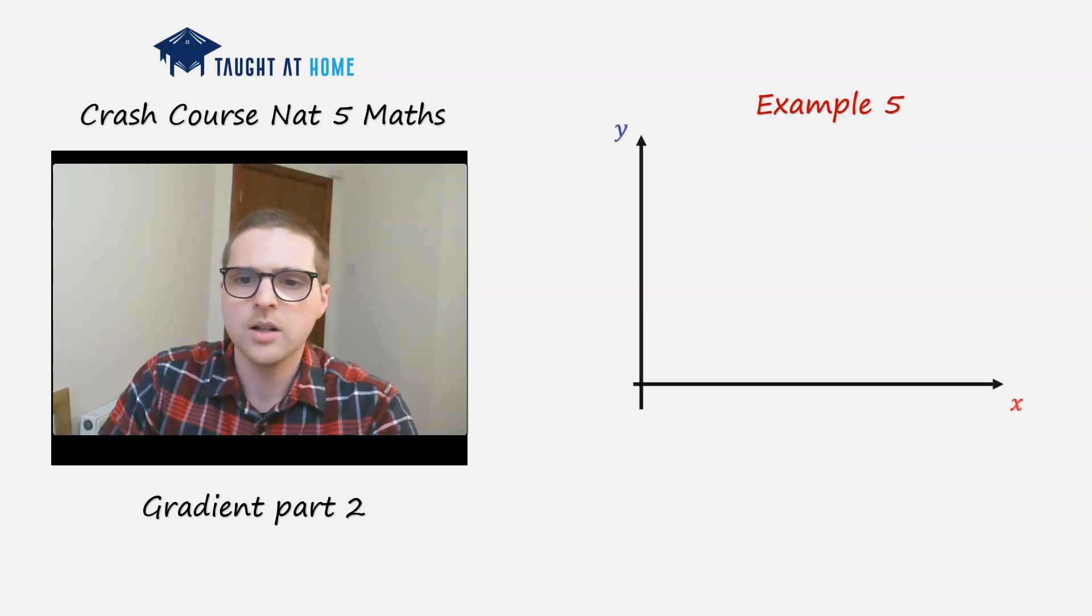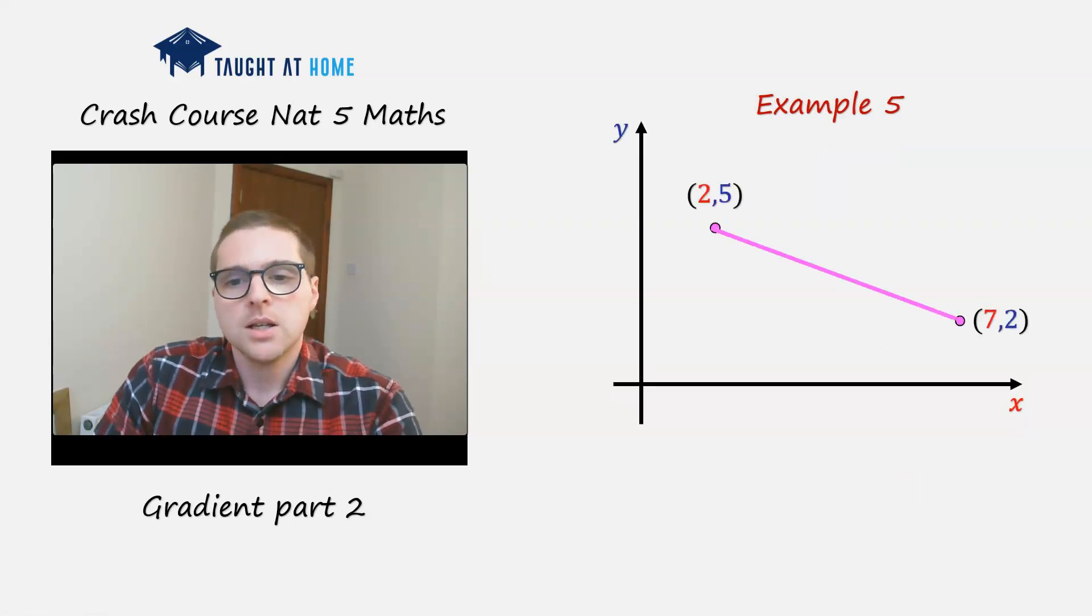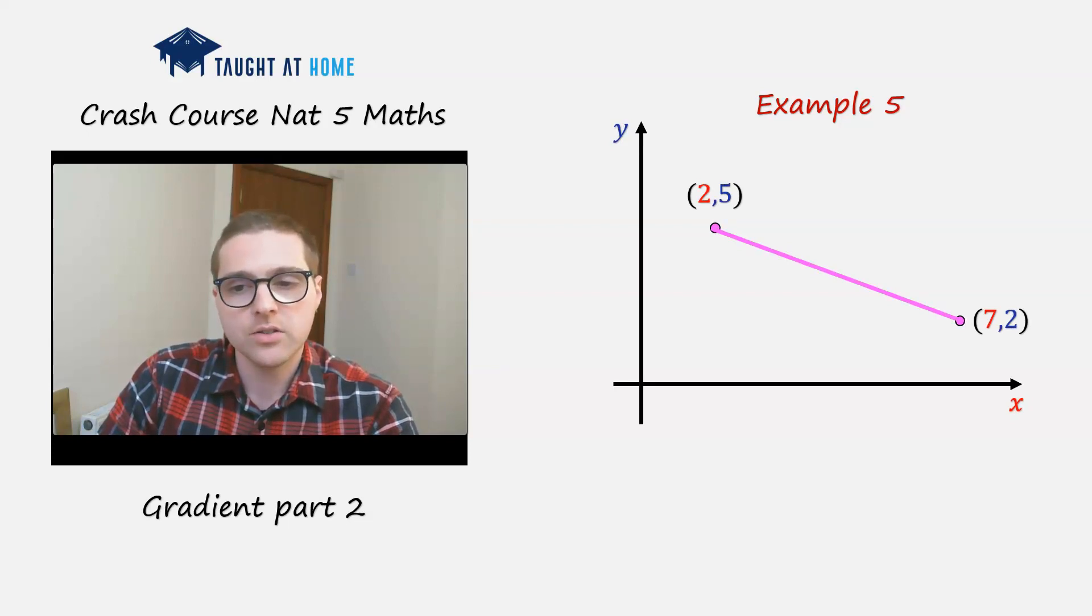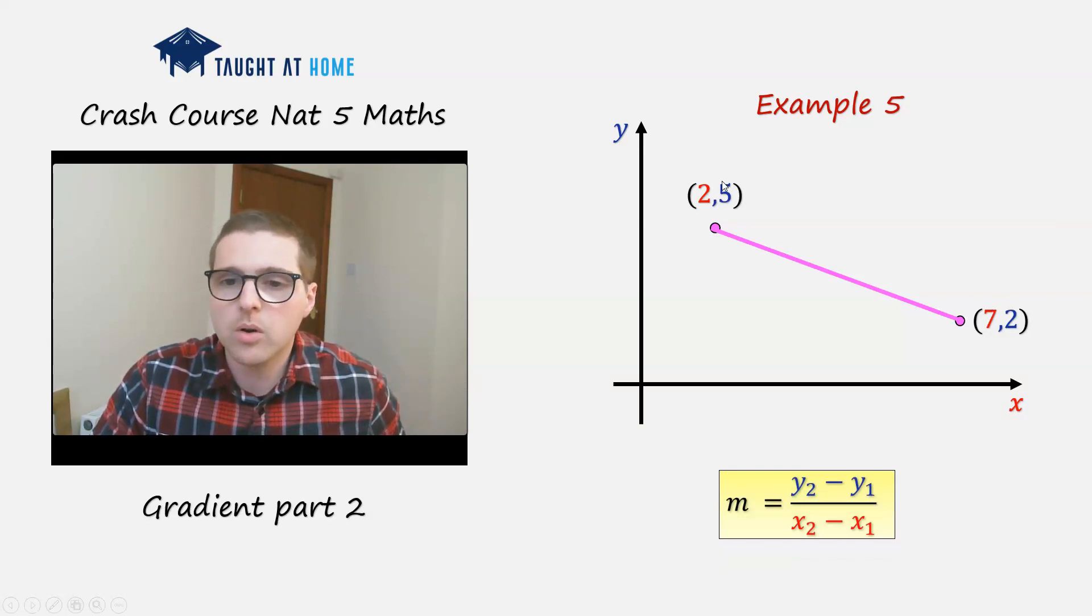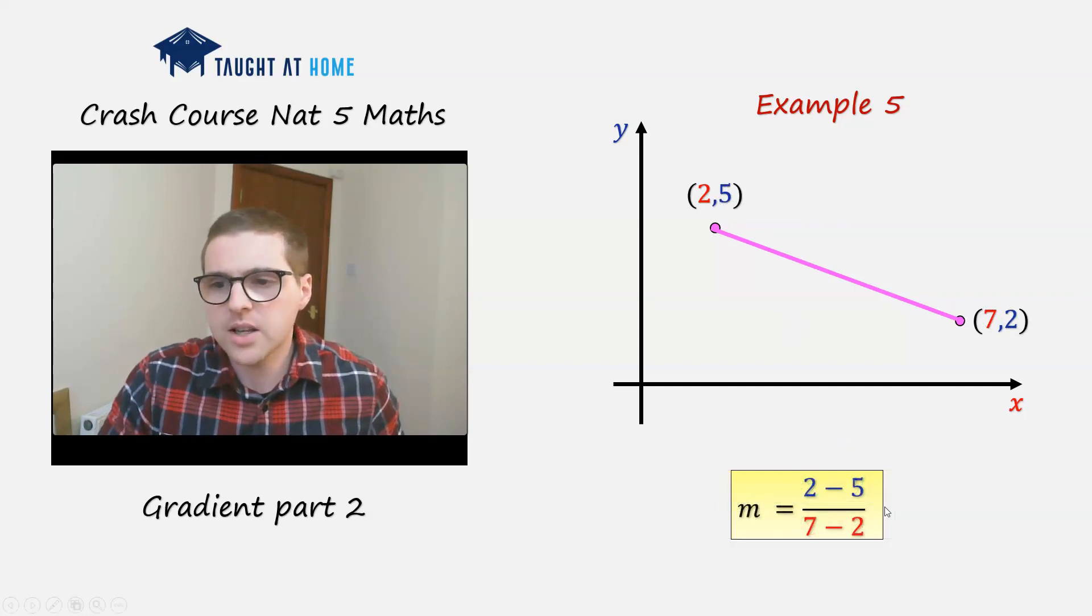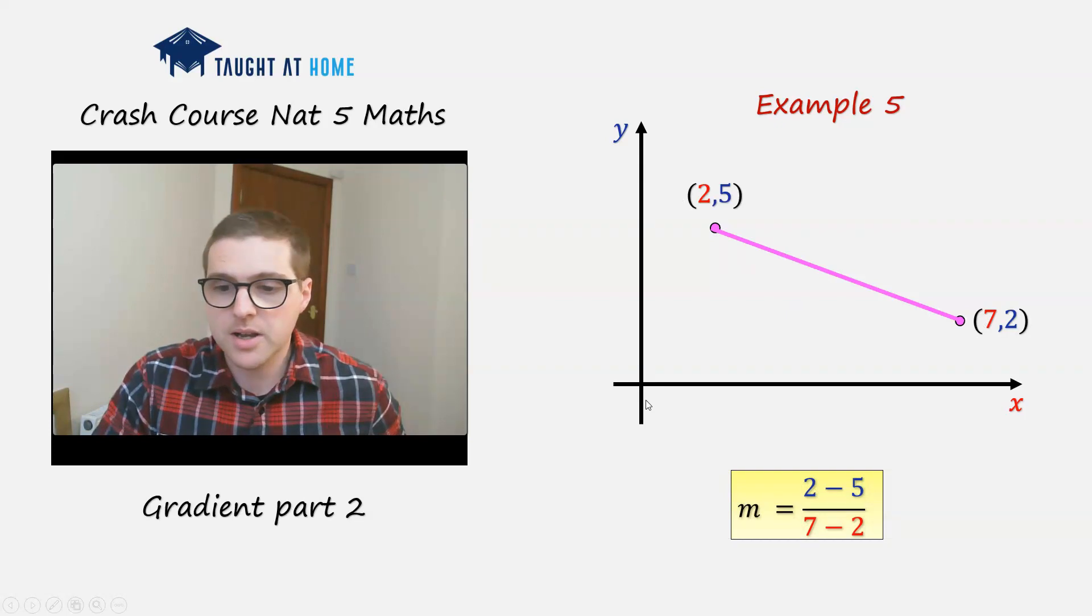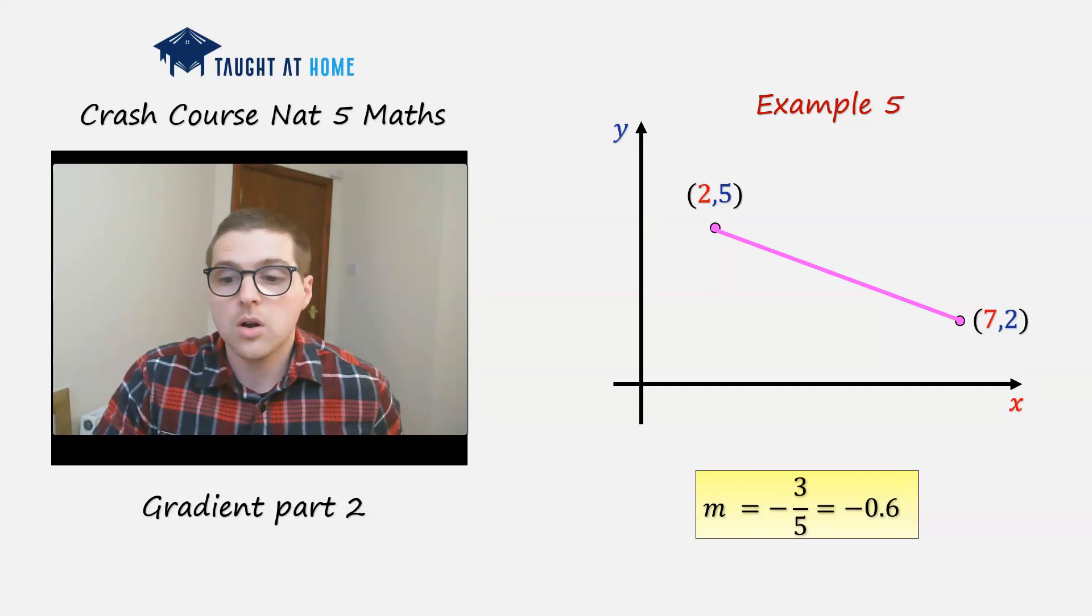Let's have another example here. Now from left to right, we have a straight line. The gradient seems to be going downwards, so it's like you're walking downhill. So y2 minus y1, y2 is 2, and y1 is 5, and x2 is 7, and x1 is 2. So 2 minus 5 is minus 3, 7 minus 2 is 5, and the gradient is minus 3 over 5, or as a decimal it will be minus 0.6.